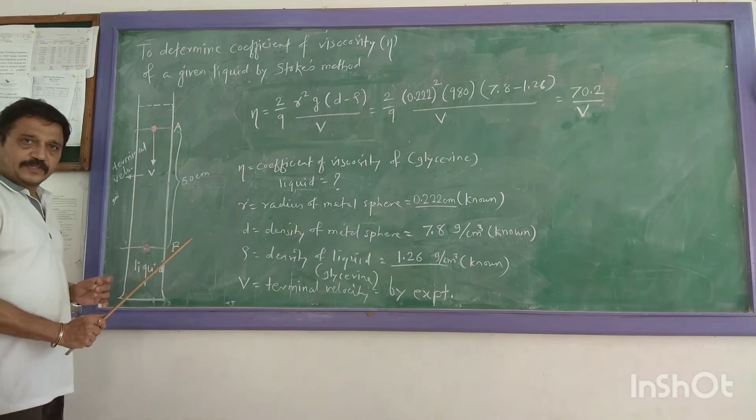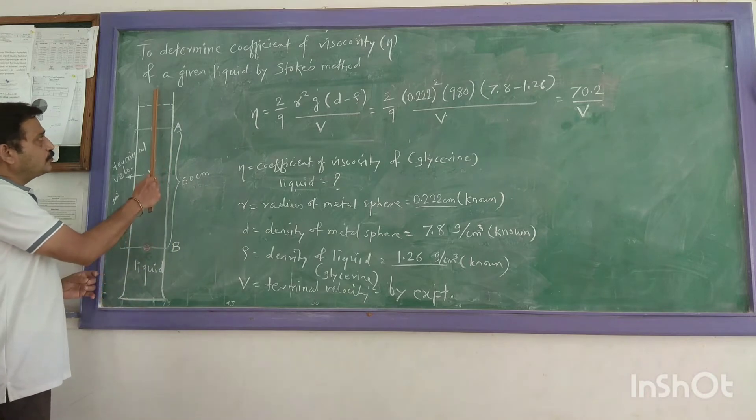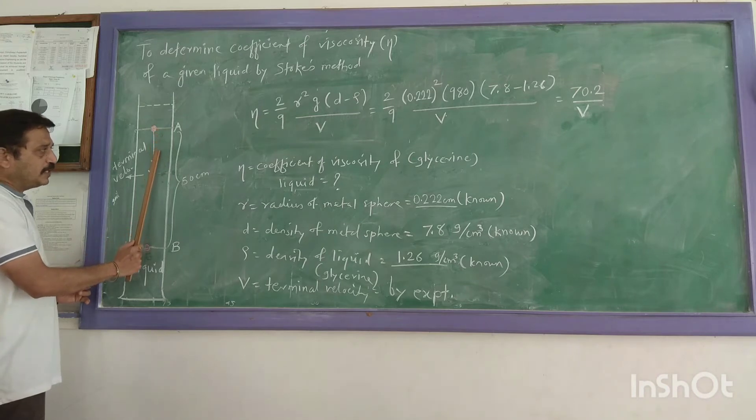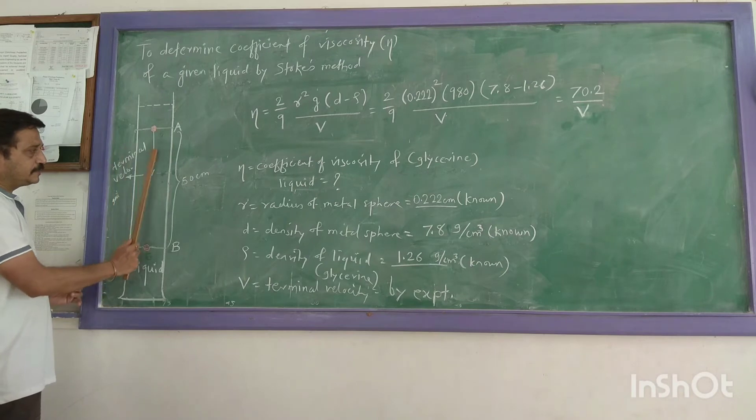Practically, it is observed that when the metal sphere falls freely through the liquid, after covering a certain distance, it falls down with a constant velocity. That constant velocity is called the terminal velocity. And that we have to find out using this method.